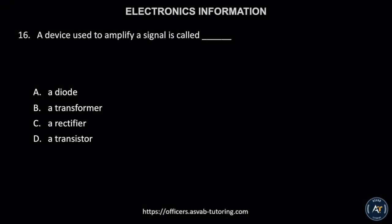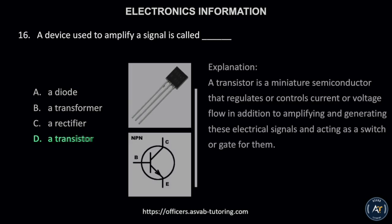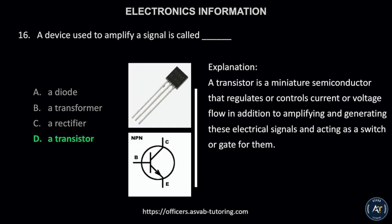Number 16. A device used to amplify a signal is called: A. A diode, B. A transformer, C. A rectifier, or D. A transistor? The correct answer is letter D, a transistor. A transistor is a miniature semiconductor that regulates or controls current or voltage flow, in addition to amplifying and generating these electrical signals and acting as a switch or gate for them.